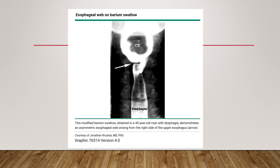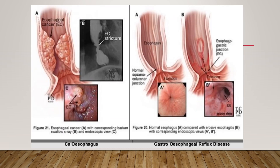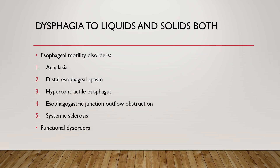Here we can see an esophageal web on a barium swallow — a modified barium swallow of a 45-year-old male with dysphagia demonstrates an asymmetric esophageal web arising from the right side of the upper esophagus. There are also diagrams showing how esophageal cancer involves the esophagus on barium swallow, compared to a normal esophagus and one damaged by gastroesophageal reflux, which is erosive esophagitis.